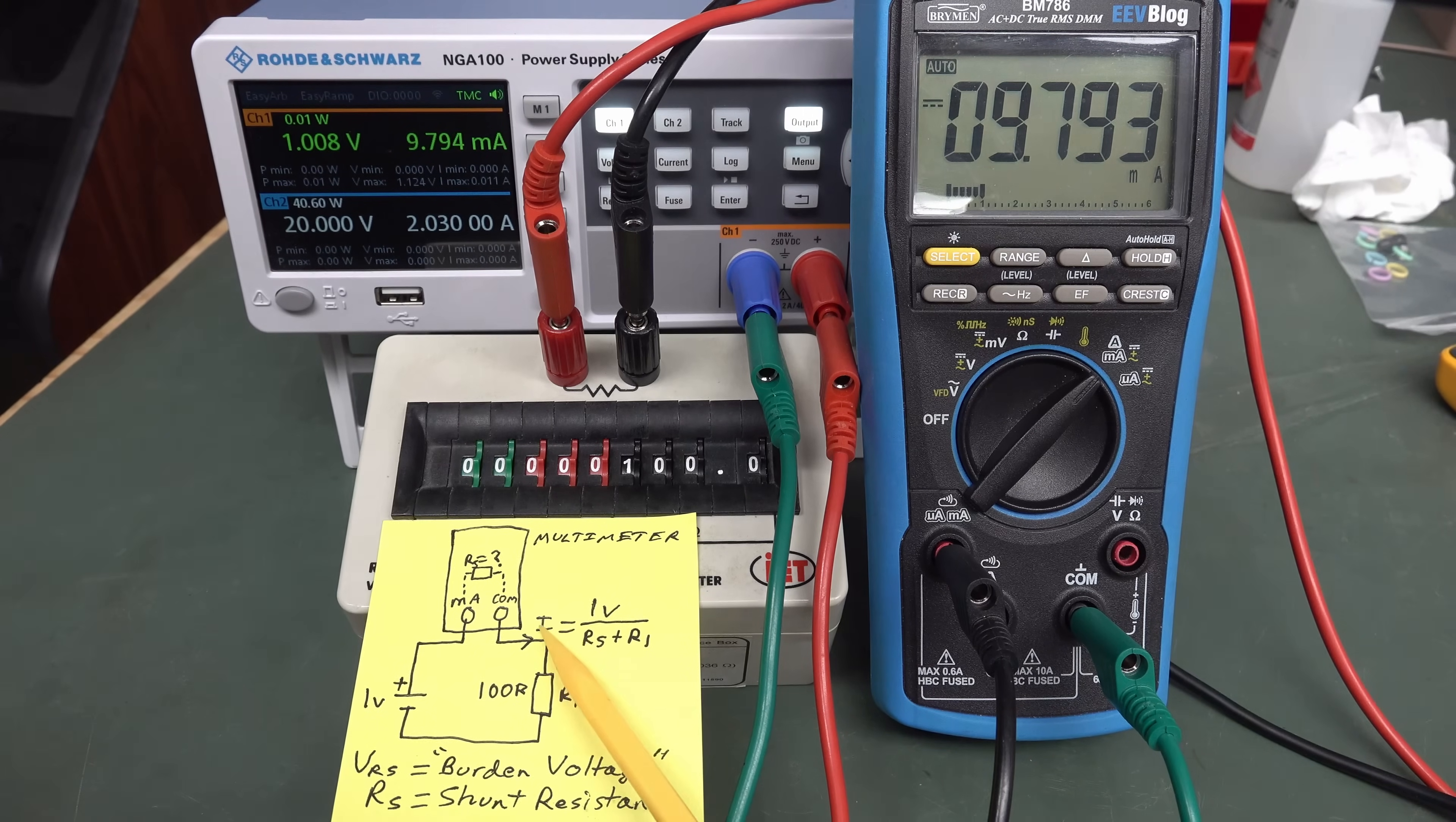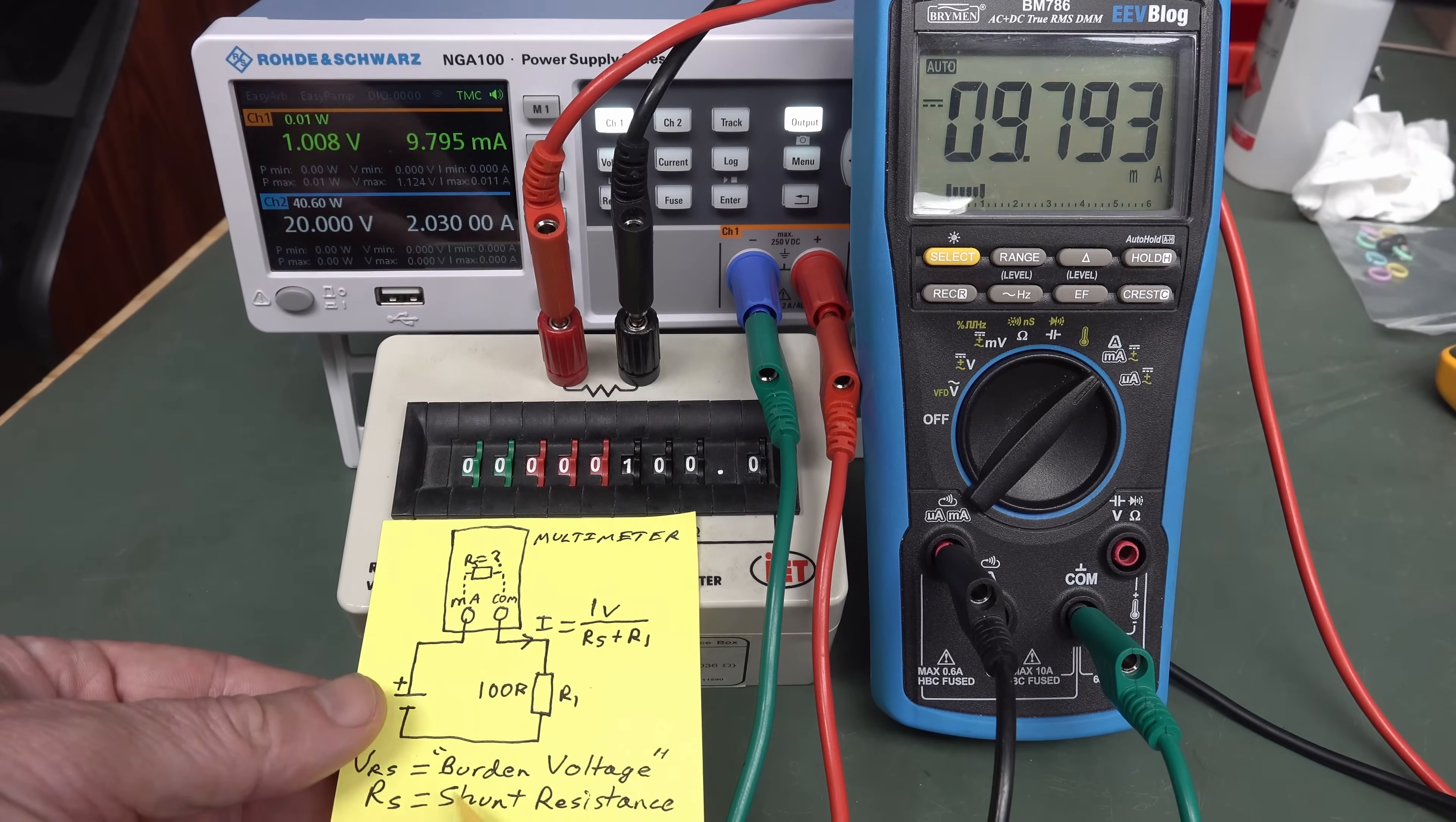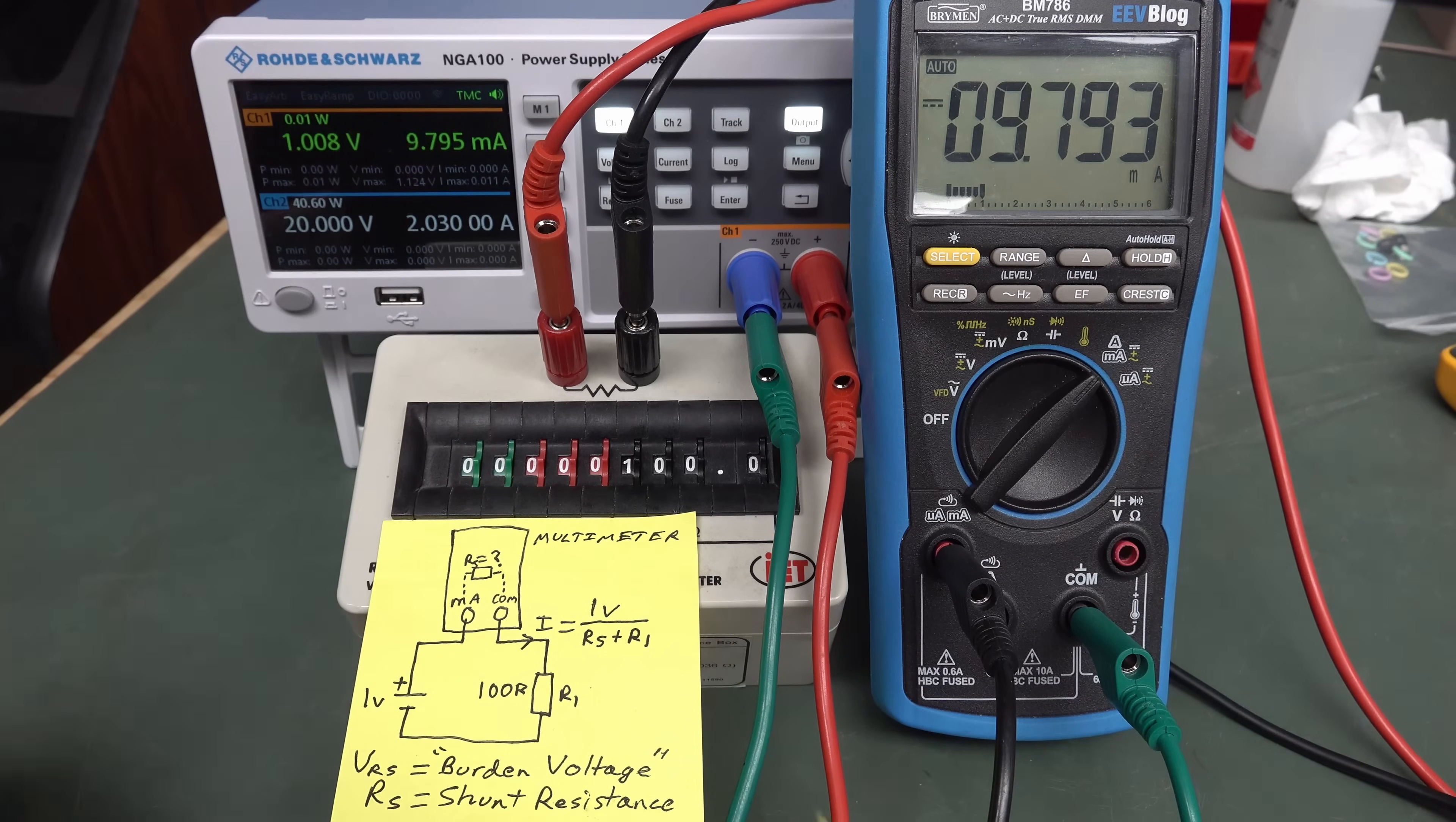So, Ohm's law, once again, our current flowing through our circuit is one volt. The one volt hasn't changed over here, but the total resistance has. It's not just 100 ohms anymore, it's 100 ohms plus that what we call a shunt resistance inside here, which we call RS here. It's RS, the shunt resistance, plus R1, which is 100 ohms. So, it's something over 100 ohms, which means we're going to get a value less than 10 milliamps. And that's what we're getting here. So, every multimeter is going to have this.